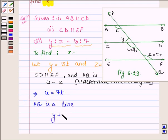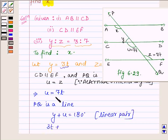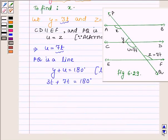Since PQ is a line, Y plus U equals 180 degrees as they form a linear pair. Substituting Y = 3T and U = 7T, we get 3T + 7T = 180 degrees. This implies 10T = 180 degrees, or T = 18 degrees.